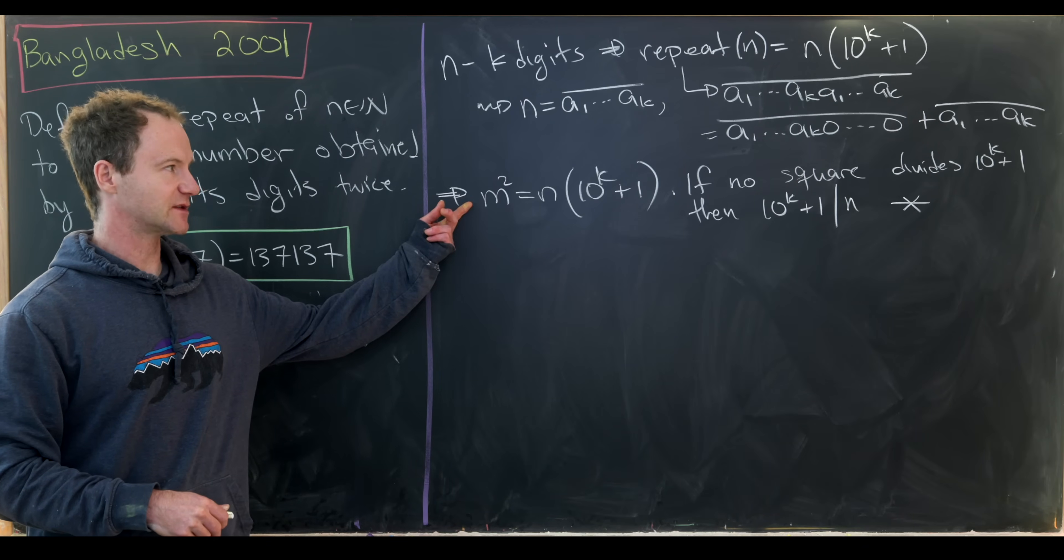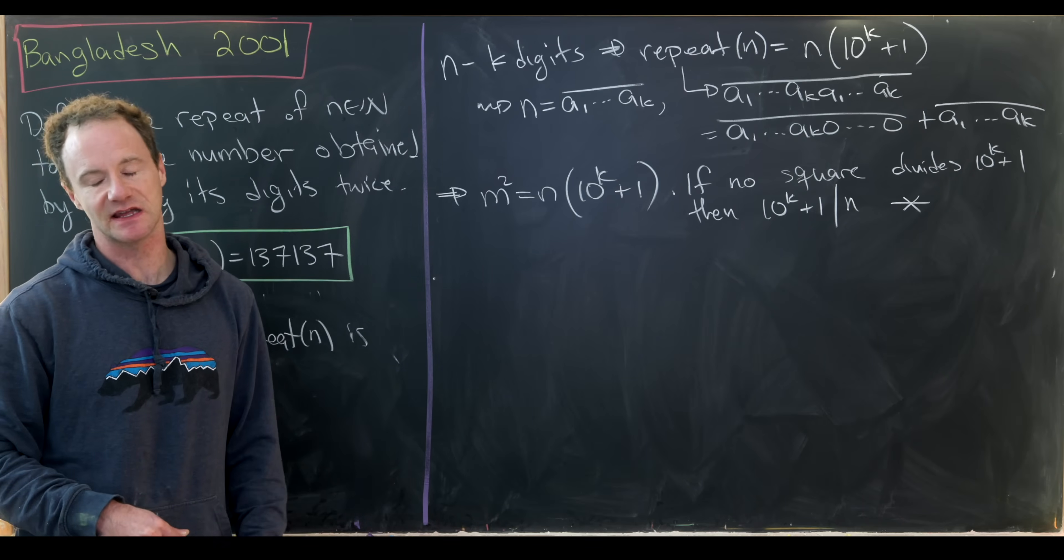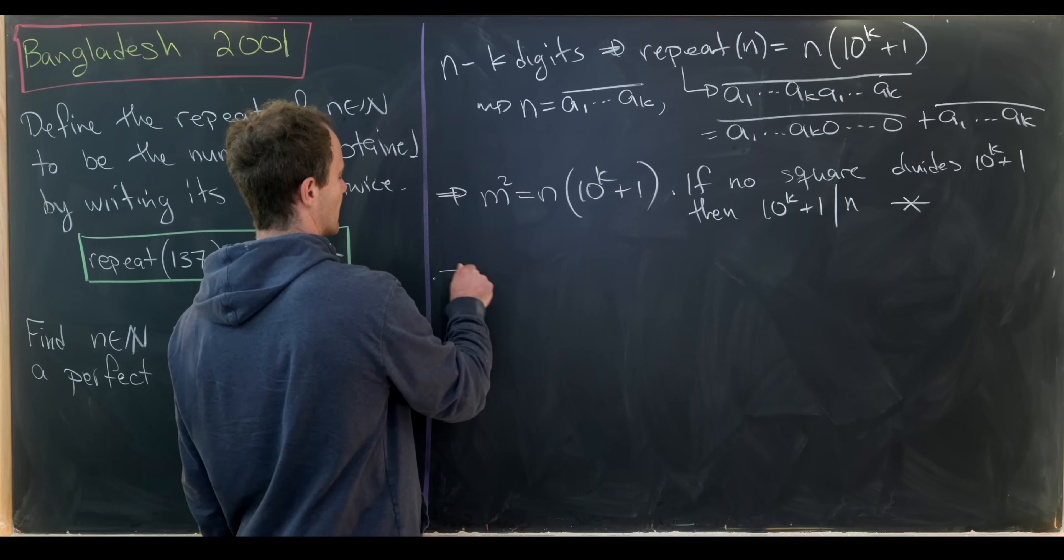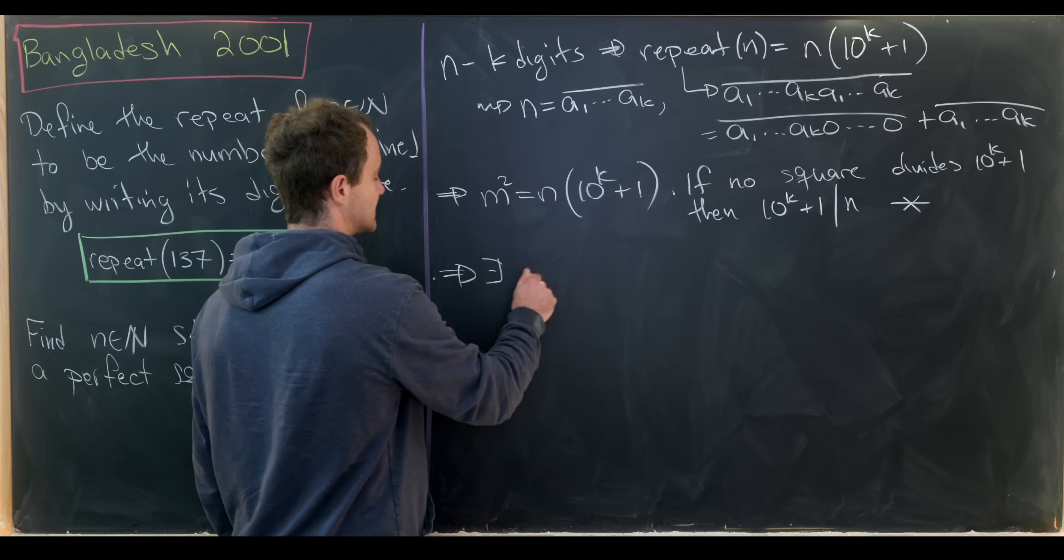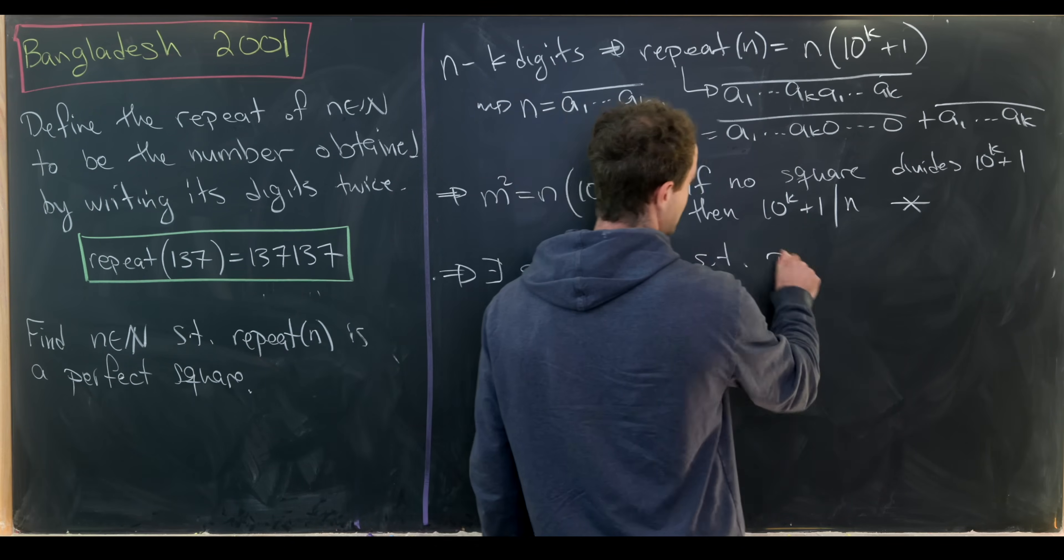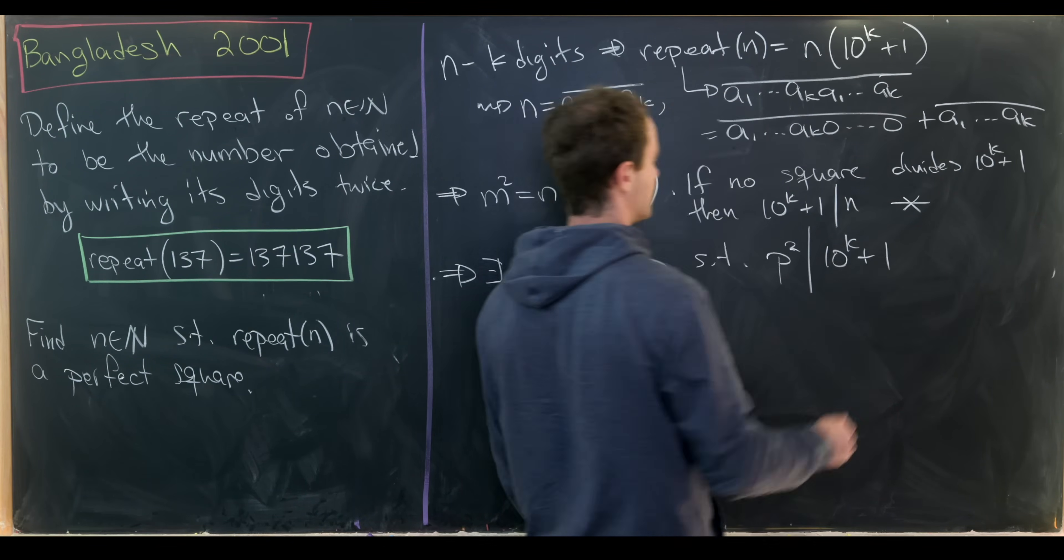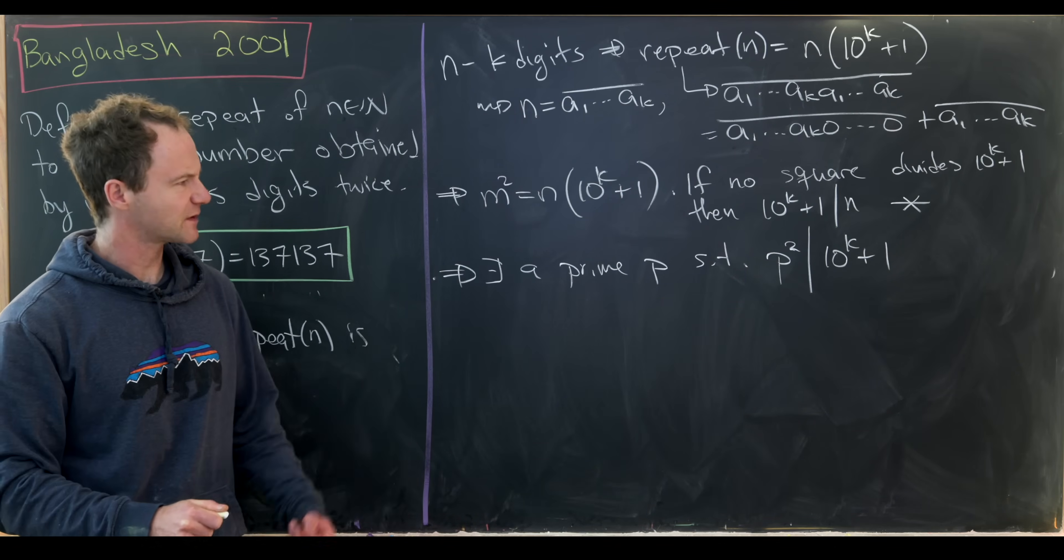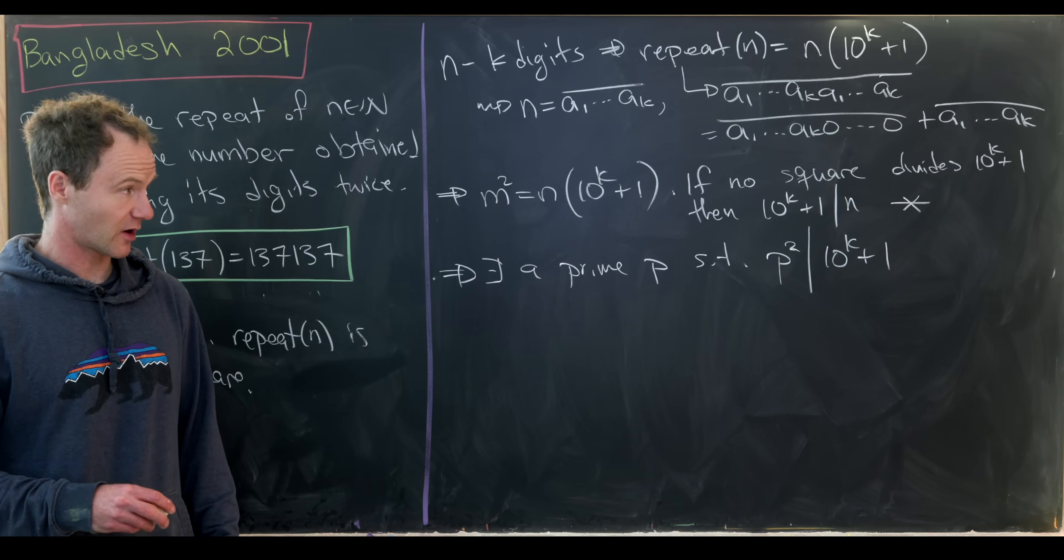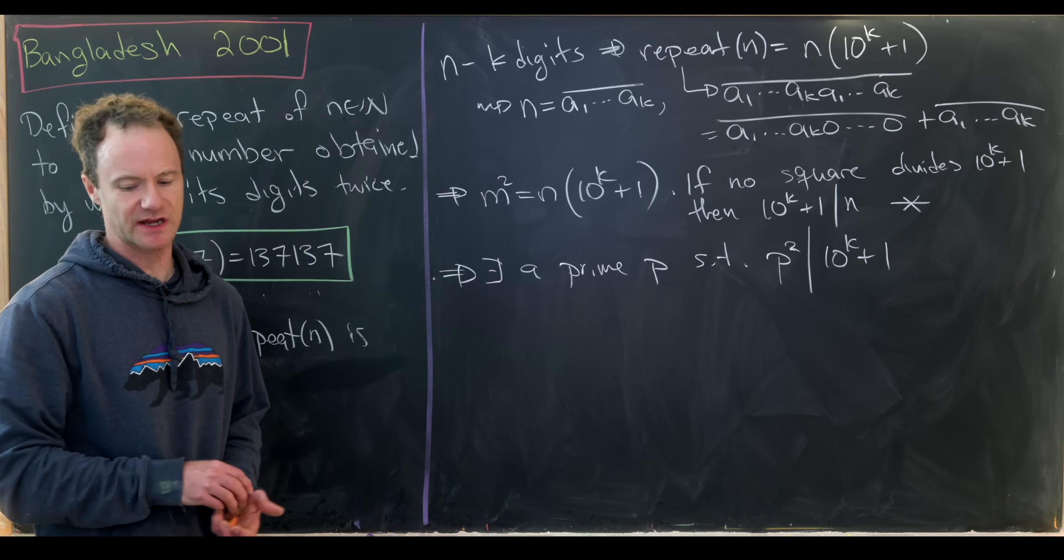But that means that if we have this as a perfect square, we must have a perfect square that divides into 10 to the k plus 1. But we might as well take that perfect square to be the square of a prime. So there exists a prime p such that p squared divides into 10 to the k plus 1. Now we just have to figure out some good guesses for that prime, as well as what that k might be. And this is a little bit tricky.